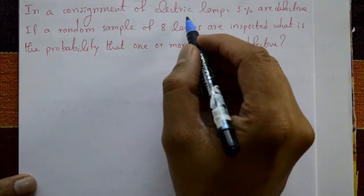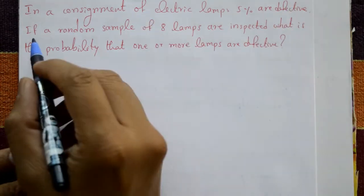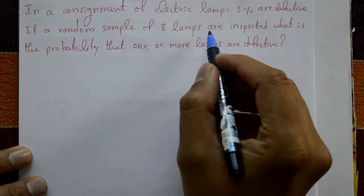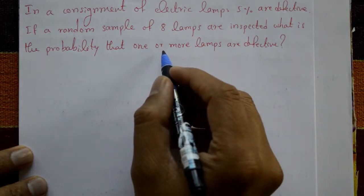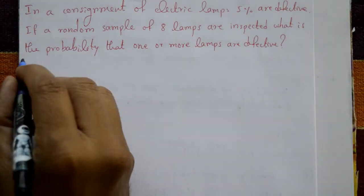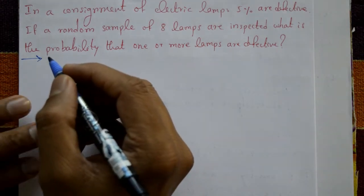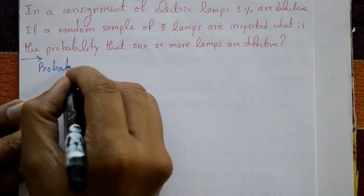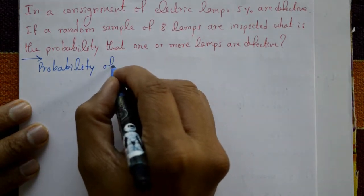In a consignment of electric lamps, 5% are defective. If a random sample of 8 lamps are inspected, what is the probability that one or more lamps are defective? Now using binomial distribution, probability of a defective lamp: